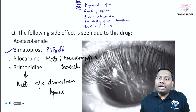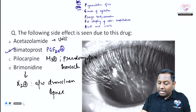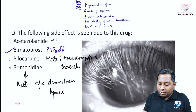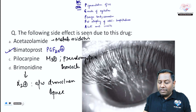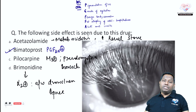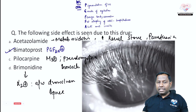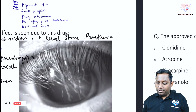Acetazolamide, dorzolamide, and brinzolamide are carbonic anhydrase inhibitors associated with urinary alkalosis or hyperchloremic metabolic acidosis, increased risk of renal stones, and paresthesias among other side effects. The correct answer for this question is bimatoprost.